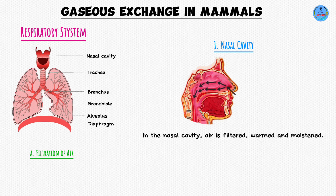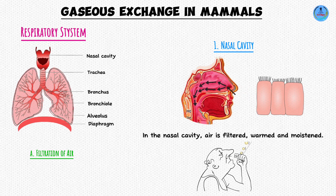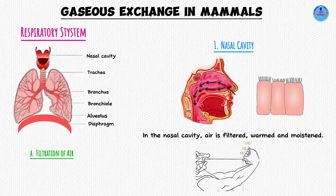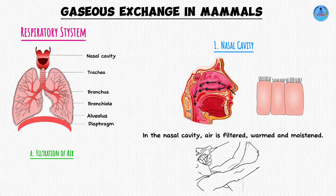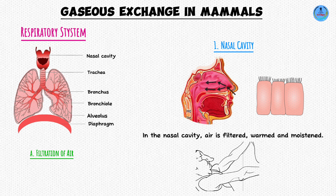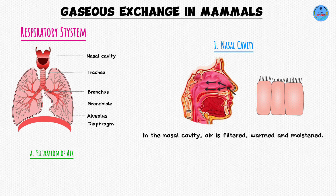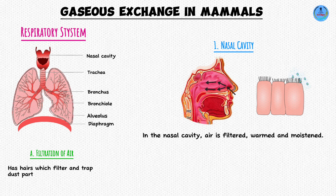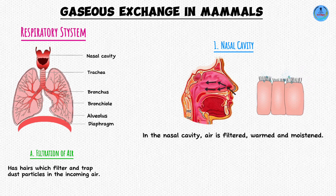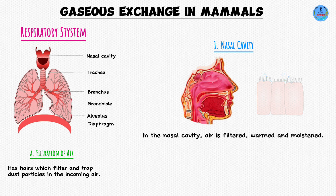Number one, the lining of the nasal cavity has hair. Everyone at this point knows that we have hair in the nasal cavity. But these hairs play a very important role in filtering the incoming air — they trap any foreign particles such as dust particles, therefore preventing them from entering the trachea.